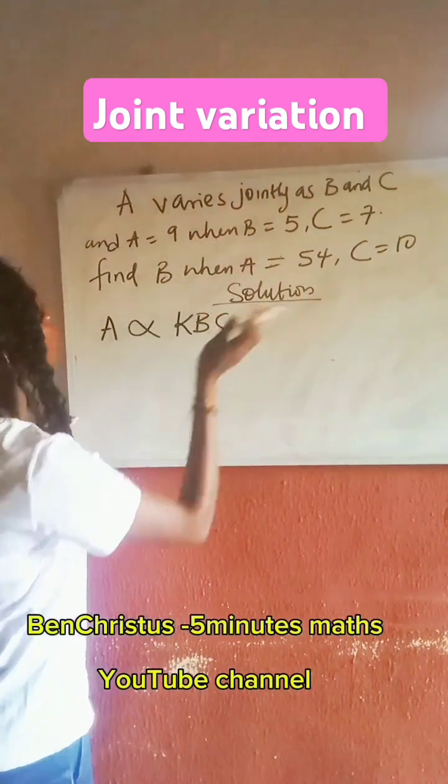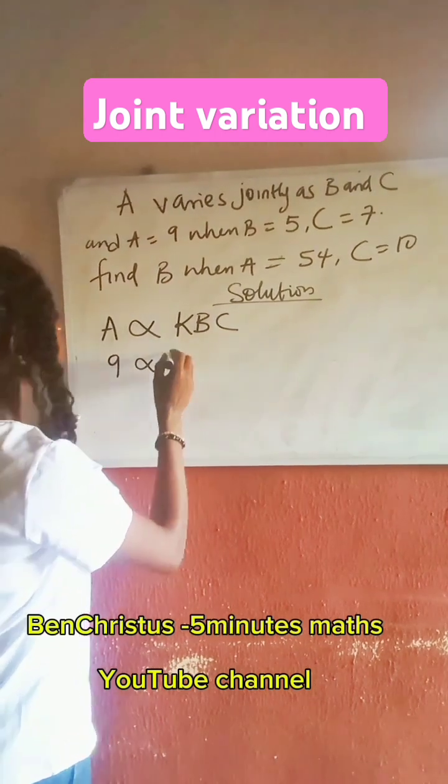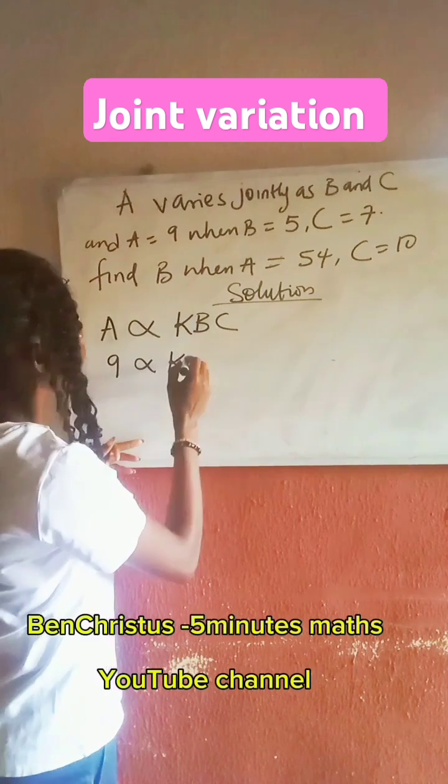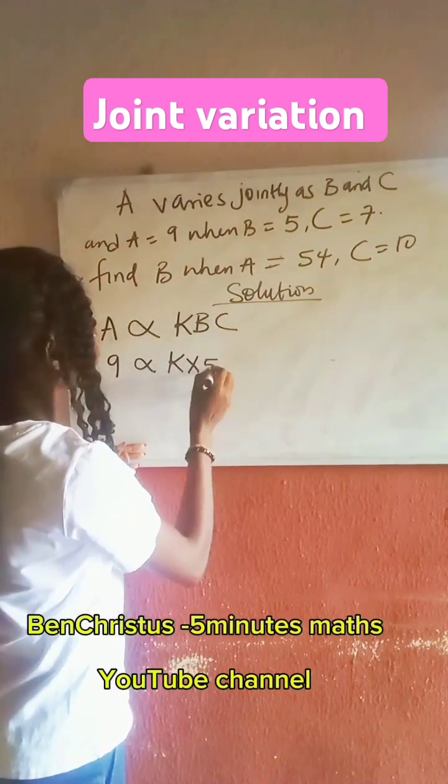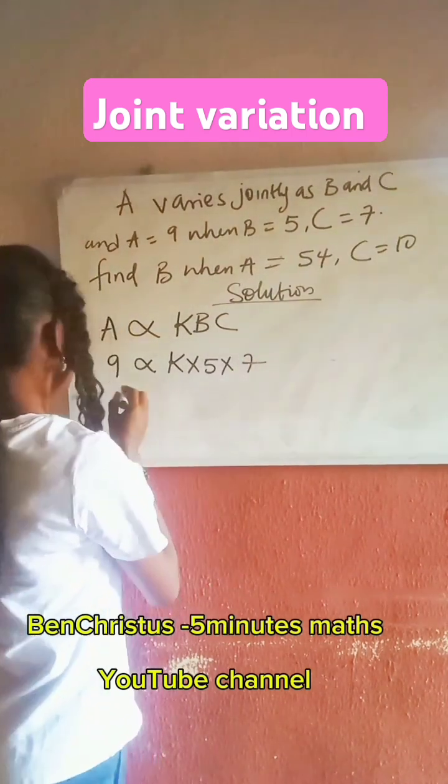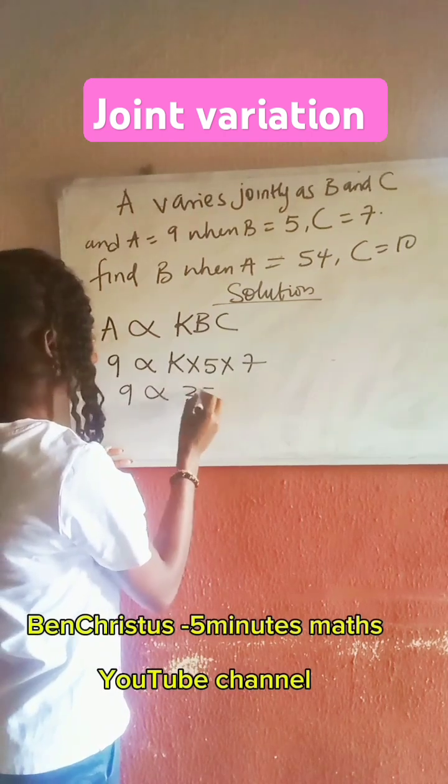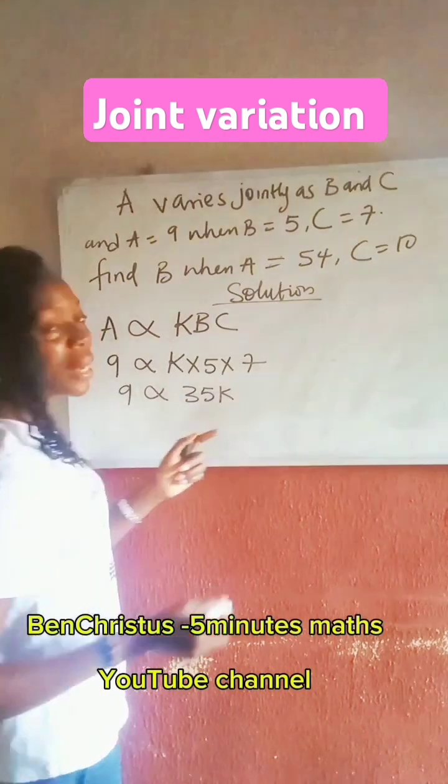Now let's equate when A is 9, it varies as K multiplied by 5, multiplied by 7. And 9 will vary as 35K. K is a constant.